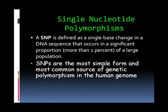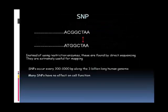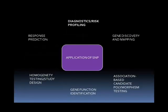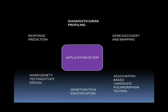The single nucleotide polymorphism is defined as a single base change in a DNA sequence that occurs in a significant proportion of a large population. They are the most simple form and most common source of genetic polymorphism in the human genome. SNPs are found by direct sequencing and not by using restriction enzymes. They occur every 300 to 1000 base pairs along the 3 billion base-long human genome, and many SNPs have no effect on cell function.